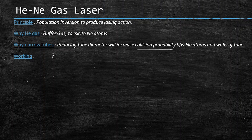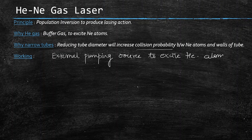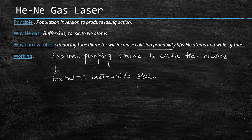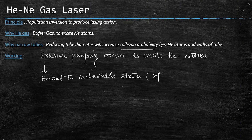Now let's see the working. First, we apply an external pumping source — a DC source — to excite the helium atoms. The atoms get excited to metastable states. The key property of metastable states is that spontaneous emission cannot take place from them.